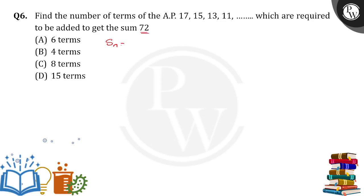So here, Sn value is given as 72, a is equal to 17, d is equal to 15 minus 17, which equals minus 2. What we have to find is the n value.